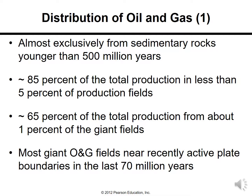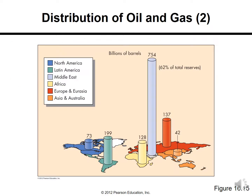Oil and gas distribution is almost exclusively from sedimentary rocks younger than 500 million years. Nearly 85% of total production comes from less than 5% of production fields, and nearly 65% of total production comes from about 1% of giant fields. Most giant oil and gas fields are near recently active plate boundaries from the last 70 million years. The Middle East holds 754 billion barrels — 62% of total reserves.